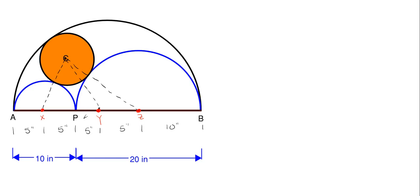The unknown portion from C to the edge of its circle I'll call R — the radius of circle C. Once I have the radius I can get the diameter. The line segment from X to C is 5 plus R. The segment from C to Z is 10 plus R (10 inches to the edge, then R to the center). For the Y portion, I extend the line upward by R, so the line from C to Y is 15 minus R.